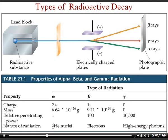Comparing the three decay types: alpha particles have a charge of +2 (two protons) and are relatively heavy; beta particles have a charge of -1 and very little mass; gamma rays have zero charge and zero mass. For penetrating power on a scale of 1 to 10,000 — alpha particles rate 1, beta particles rate 100, and gamma rays rate 10,000, meaning gamma rays do the most damage to cells.